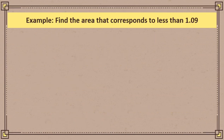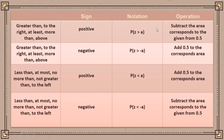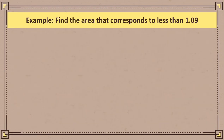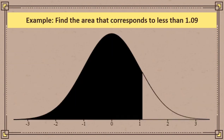Another example: find the area that corresponds to less than z = 1.09. We have the clue word 'less than.' If your clue word is less than, at most, no more than, not greater than, or to the left, and your given is positive, after getting the area of your z-value, we add the area to 0.5. Construct the normal curve and shade the area. Since we have 'less than,' our shaded area extends from 1.09 to the left.